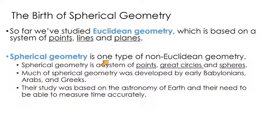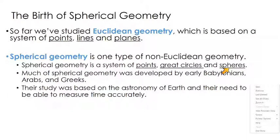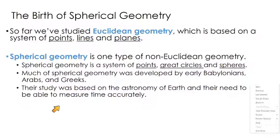Spherical geometry is non-Euclidean geometry — it's not on a plane. Instead of points, lines, and planes, it uses points, great circles, and spheres. There's been a ton of progress made in spherical geometry over the centuries, and basically the study was based on the astronomy of the Earth. The Earth is a giant sphere, and there was a need to measure time accurately.